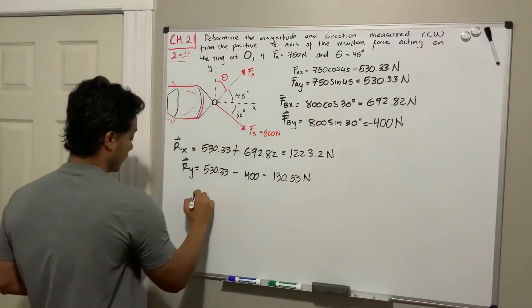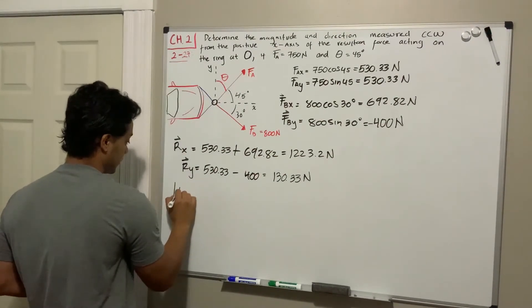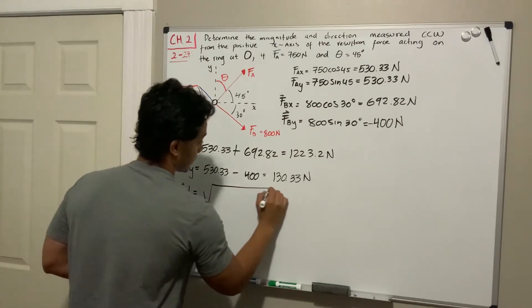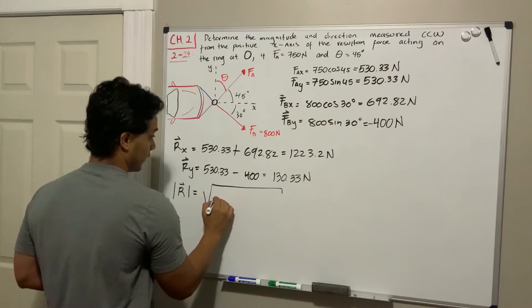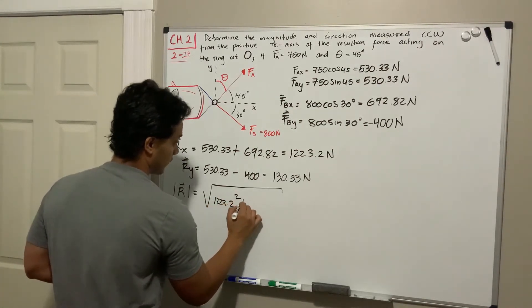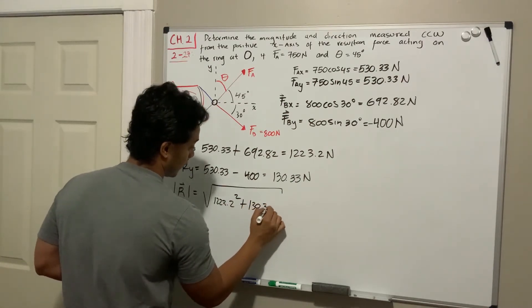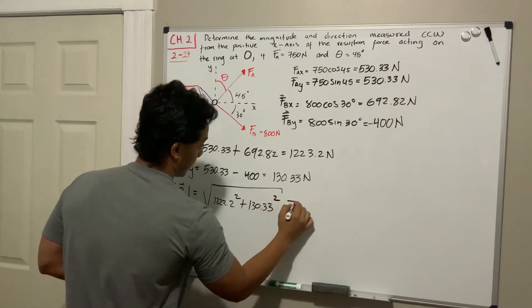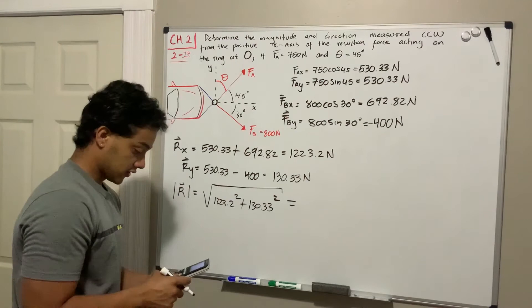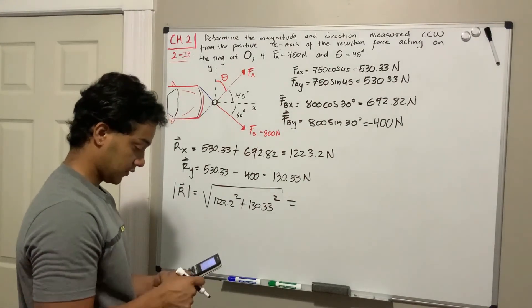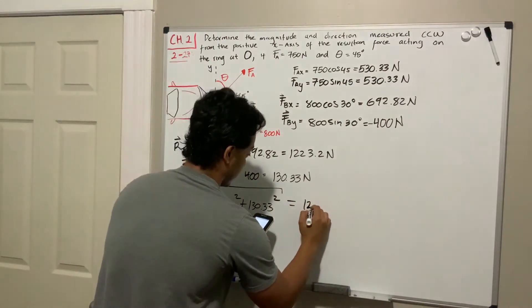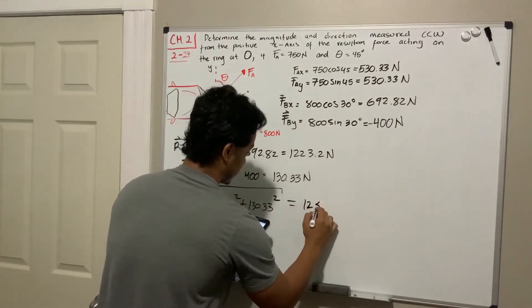Now they want us to find the magnitude, so we're going to do Pythagorean theorem. This is going to be equal to the square root of 1223.2 squared plus 130.33 N squared. Using our calculator, this will give us a total of 1230 N. So this is its magnitude.